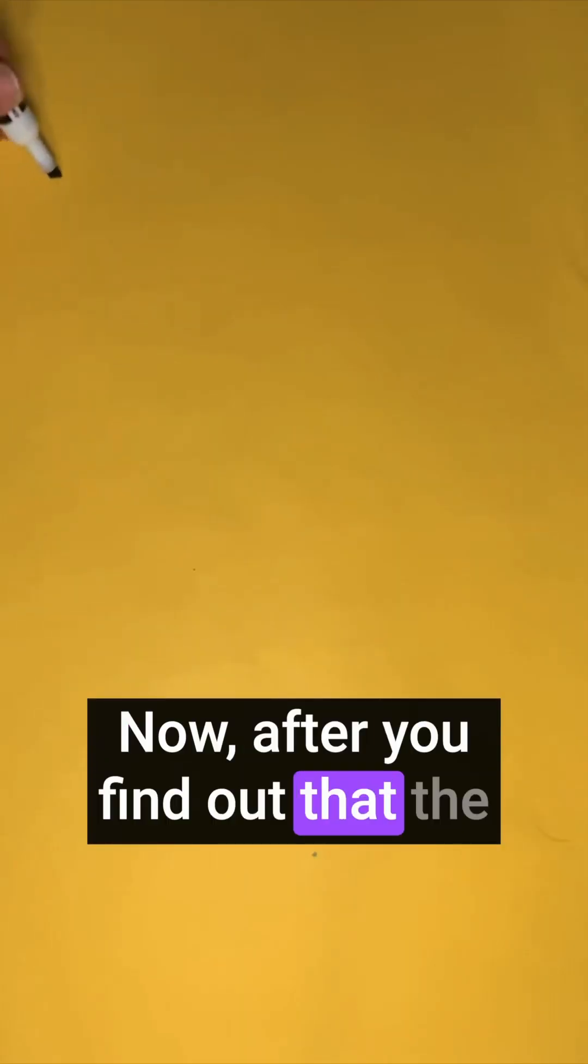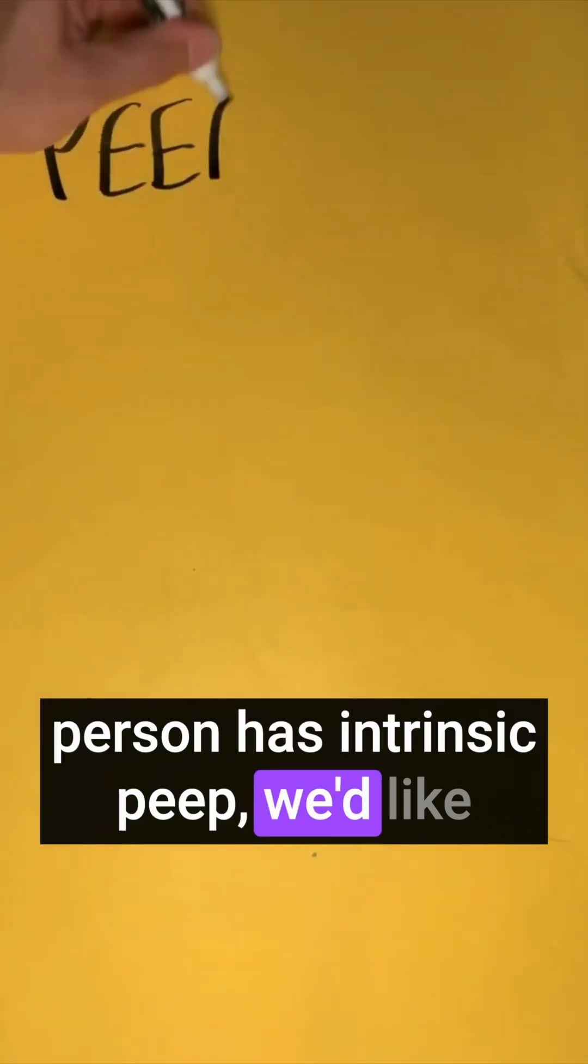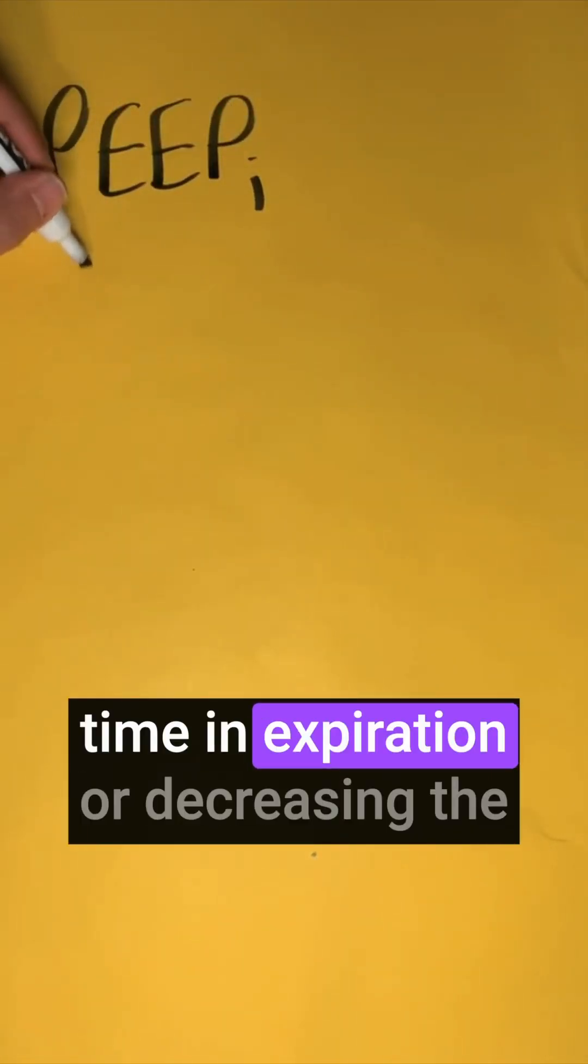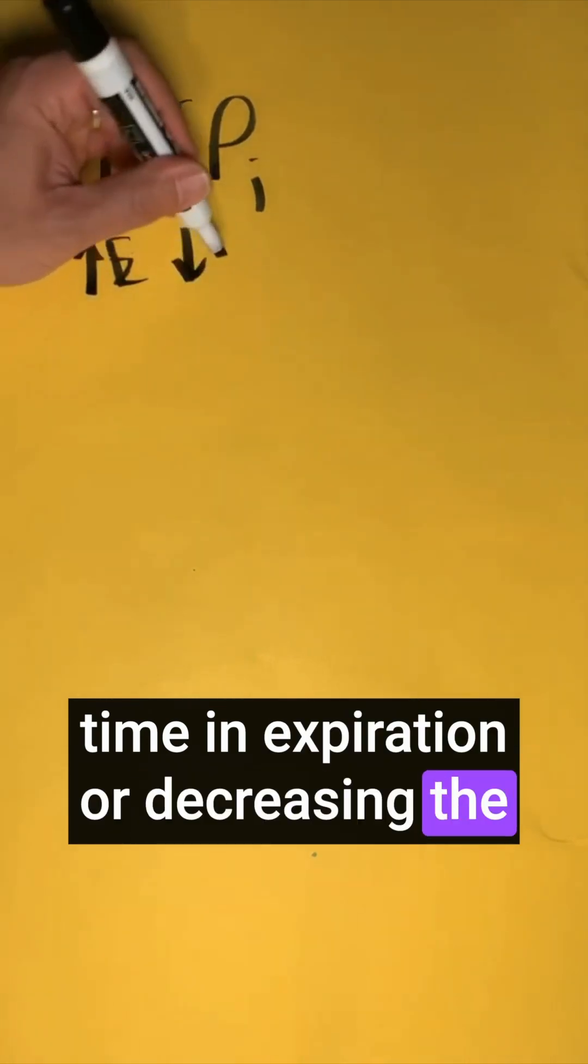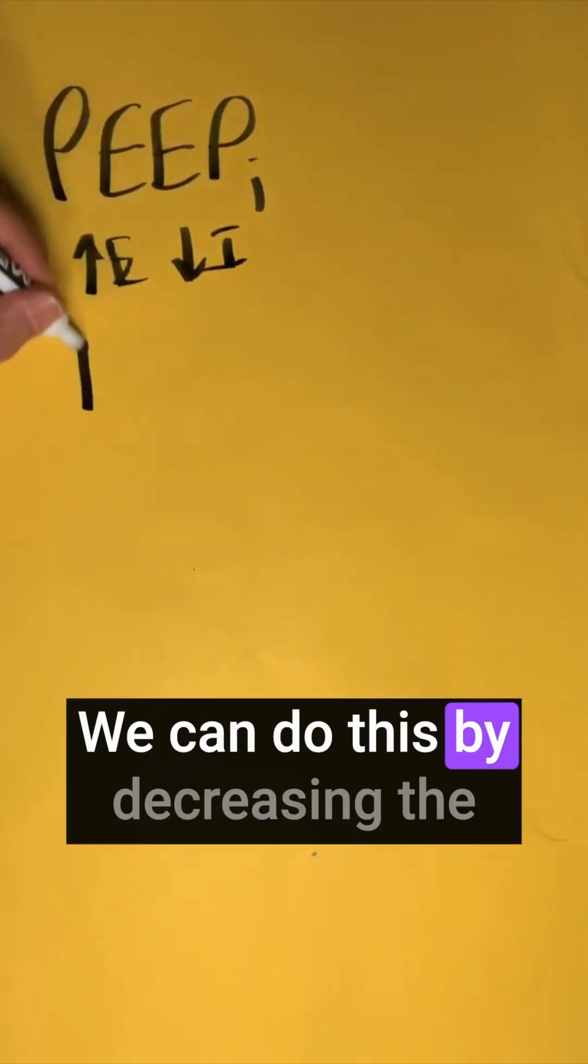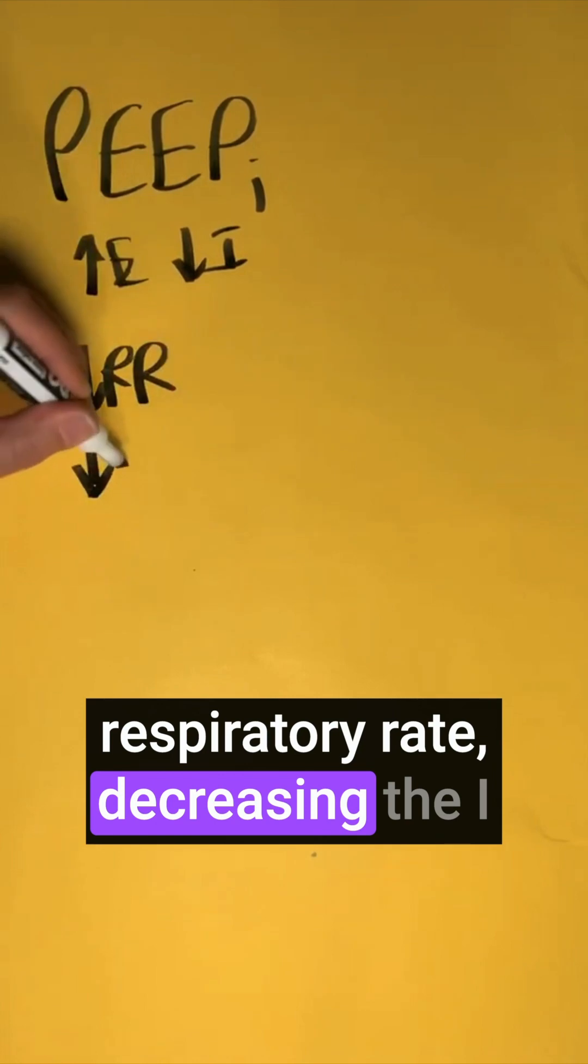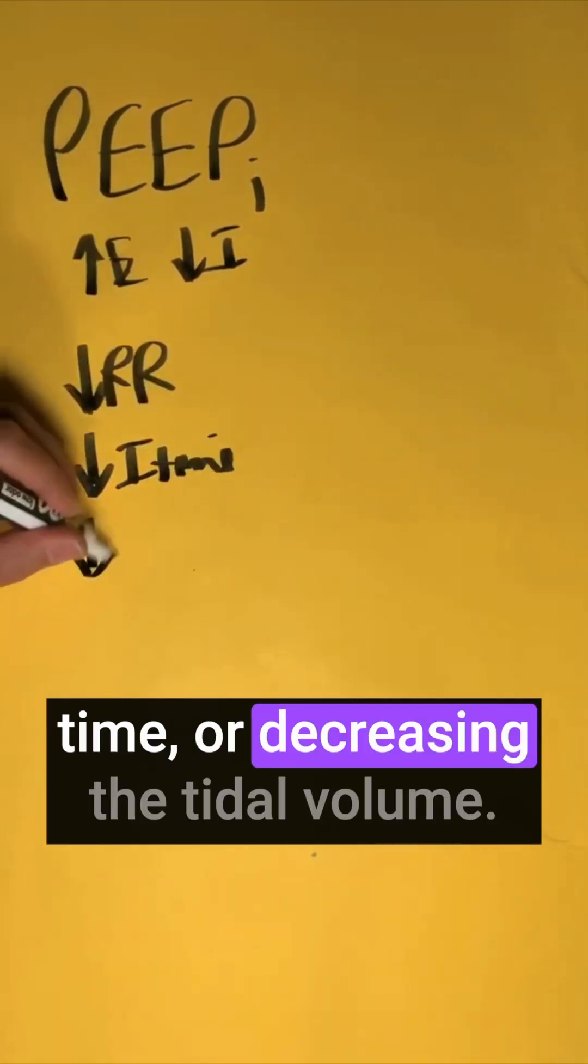Now, after you find out that the person has intrinsic PEEP, we'd like to get rid of it. We can do this by decreasing the inspiratory time, and we can do this by decreasing the respiratory rate, decreasing the I time, or decreasing the tidal volume.